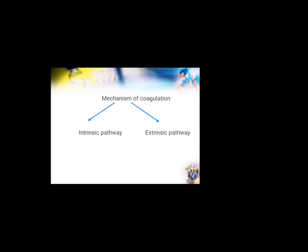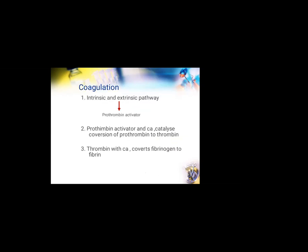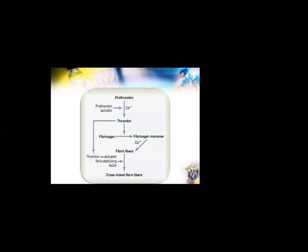This is followed by secondary hemostasis which converts this temporary platelet plug into a more definitive fibrin clot. There are different mechanisms for secondary hemostasis — mainly the intrinsic and the extrinsic pathways. Both these pathways ultimately lead to the formation of a prothrombin activator. This prothrombin activator converts prothrombin to thrombin along with calcium, and this thrombin converts fibrinogen to fibrin. The important part about secondary hemostasis is the formation of fibrin, which results in the formation of a fibrin mesh.